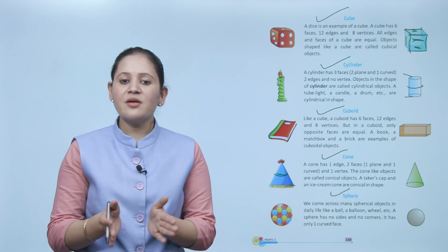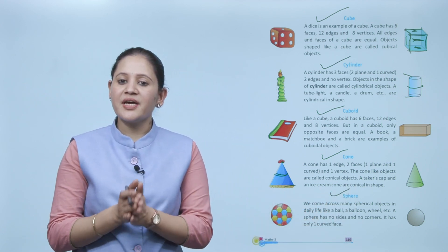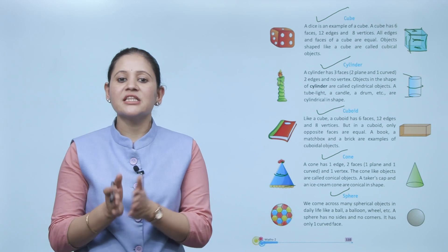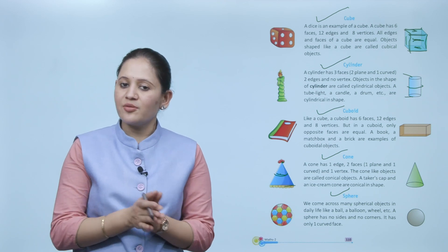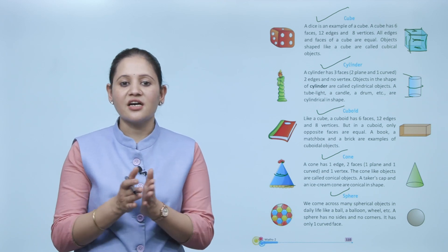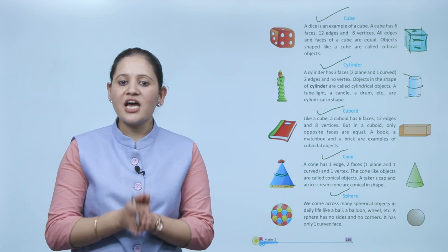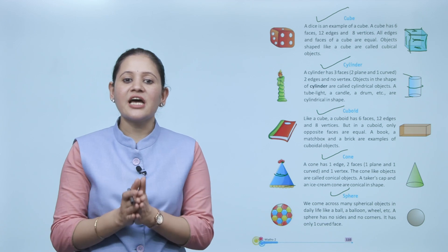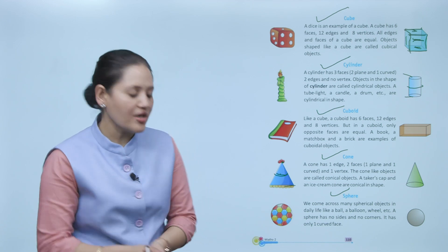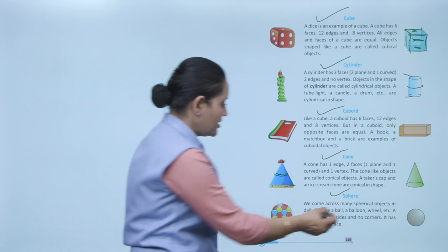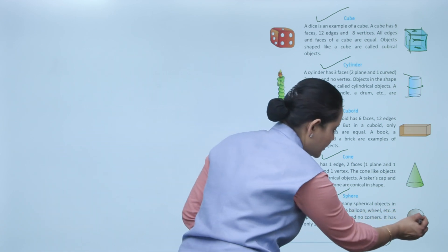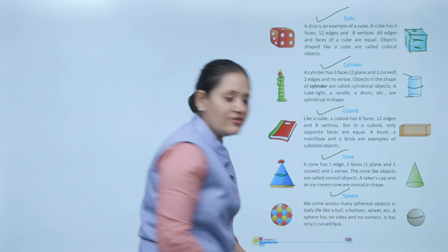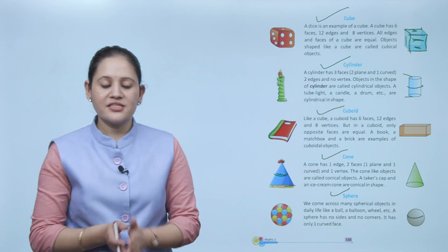We come across many spherical objects in daily life, like a ball, balloon, wheel, etc. A sphere has no sides and no corners — it has only one curved face.